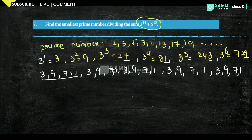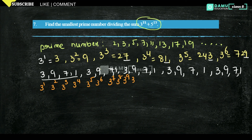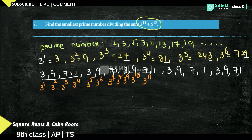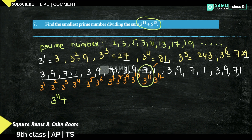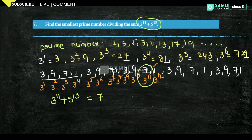This sequence 3, 9, 7, 1 continues: for 3^1 through 3^4, then 3^5 through 3^8, then 3^9 through 3^12. So for 3^11, the unit digit is 7.